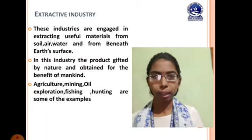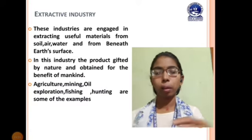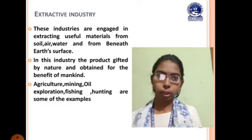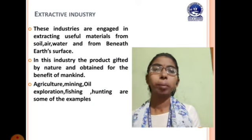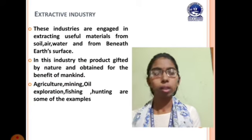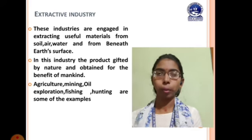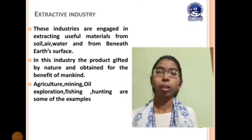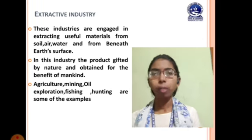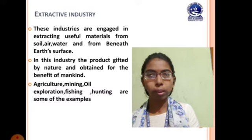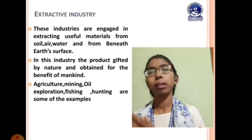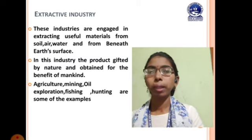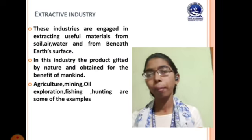In extractive industry, the products are gifted by nature and obtained for the benefit of mankind. The material we get comes from natural sources — air, soil, water, or anything natural. We can sell these things either in raw material form, such as harvesting vegetables and selling directly, or we can convert or modify them before selling. The key point is that all things are majorly dependent on natural sources.